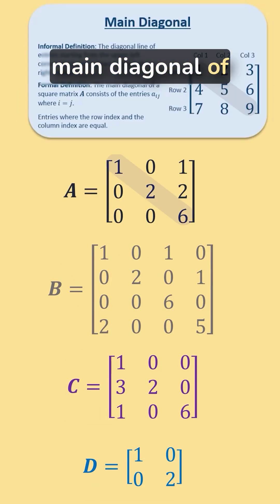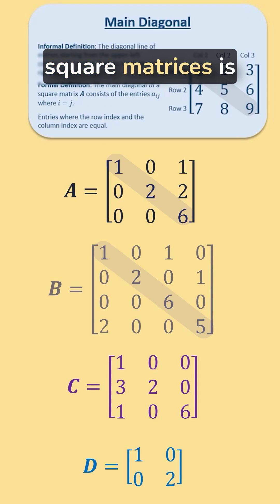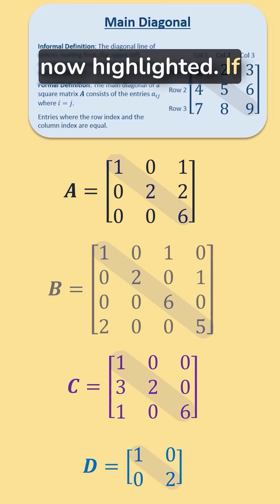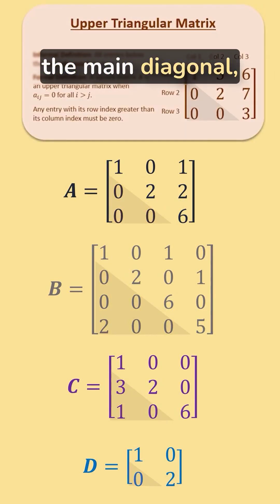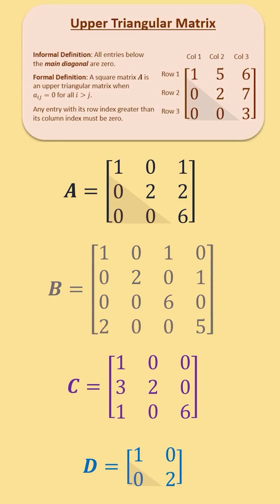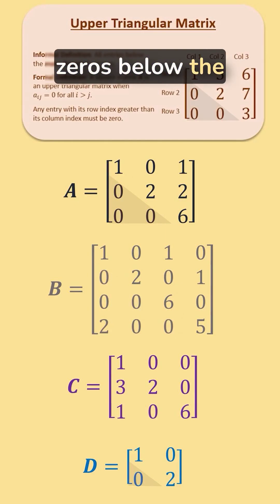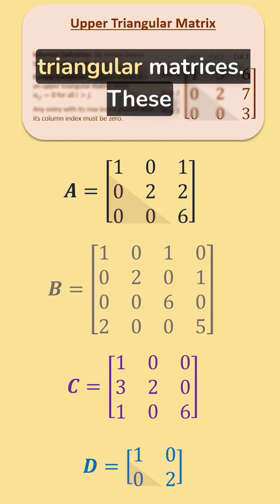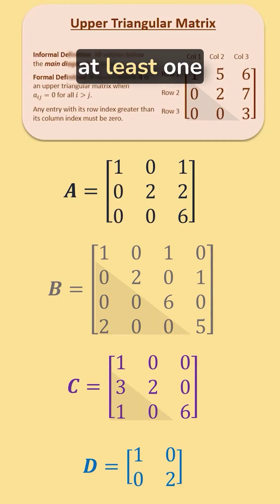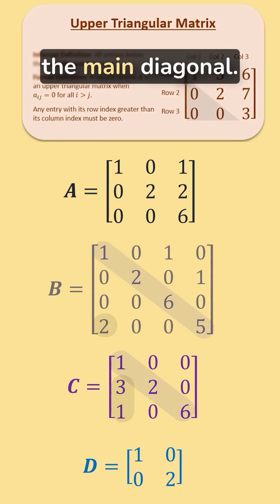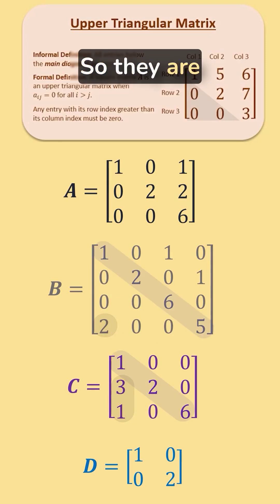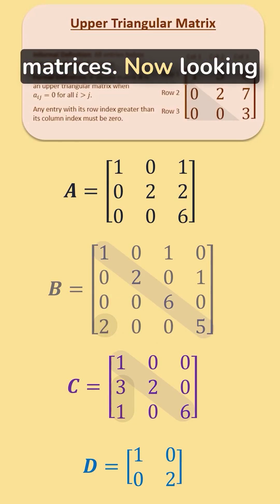The main diagonal of each of the square matrices is now highlighted. If we look at the entries below the main diagonal, we see these matrices only have zeros below the main diagonal, so they are upper triangular matrices. These other ones have at least one nonzero element below the main diagonal, so they are not upper triangular matrices.